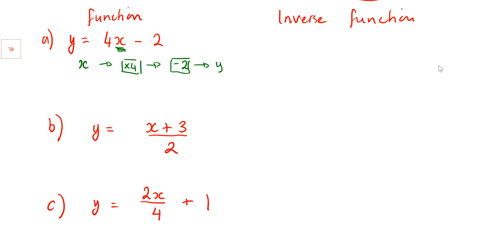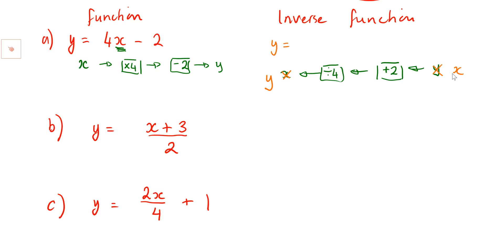For the inverse function, we do the opposite in reverse order: start with y, add 2 first, then divide by 4, and we end up back at x. Now we rewrite it: instead of y as input and x as output, we swap — so we say y equals x plus 2, all divided by 4. That's your inverse function.